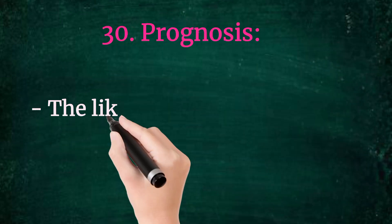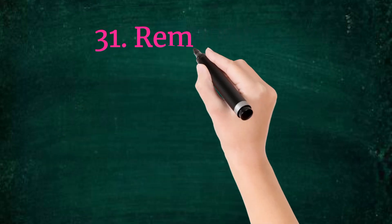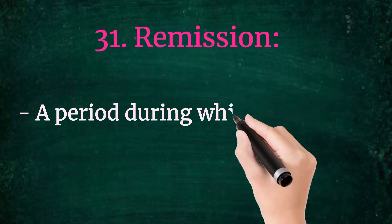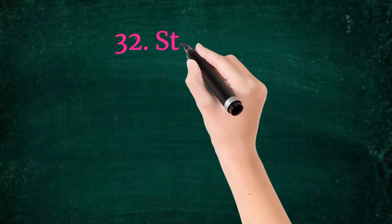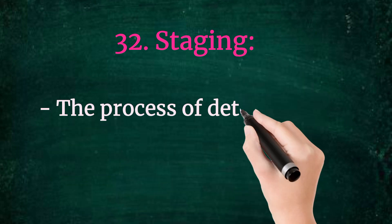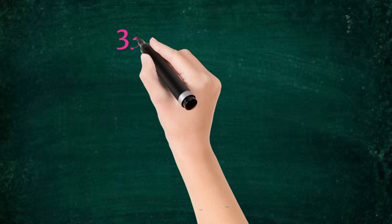30. Prognosis. The likely course and outcome of a disease. 31. Remission. A period during which symptoms of a disease are reduced or disappear. 32. Staging. The process of determining the extent of a disease, especially cancer.